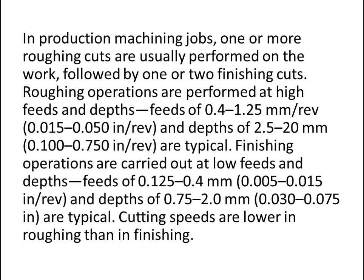In production machining jobs, one or more roughing cuts are usually performed on the work, followed by one or two finishing cuts. Roughing operations are performed at high feeds and depths — feeds of 0.4 to 1.25 mm per revolution, that is 0.015 to 0.050 inch per revolution, and depths of 2.5 to 20 mm, or 0.1 to 0.75 inch.